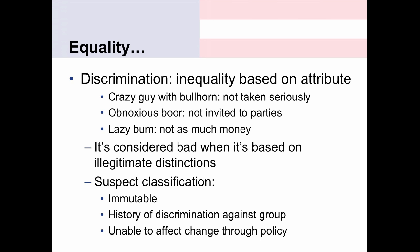A little more background: when we talk about discrimination, at its core it's basically inequality based on some attribute, and it can take many different forms. Discrimination is considered bad when it's based on illegitimate distinctions. The Supreme Court has created what they call a suspect classification — discrimination based on an attribute with a suspect characteristic is something the Supreme Court will look at very closely.